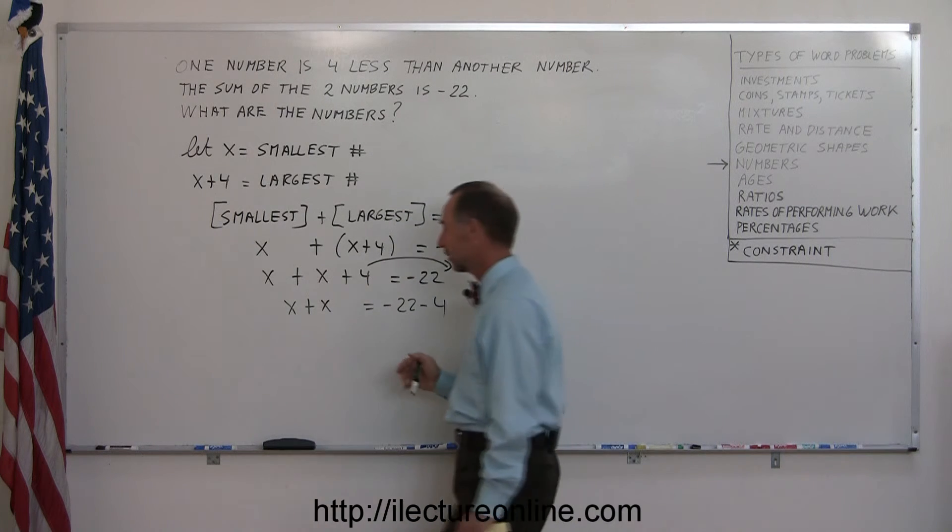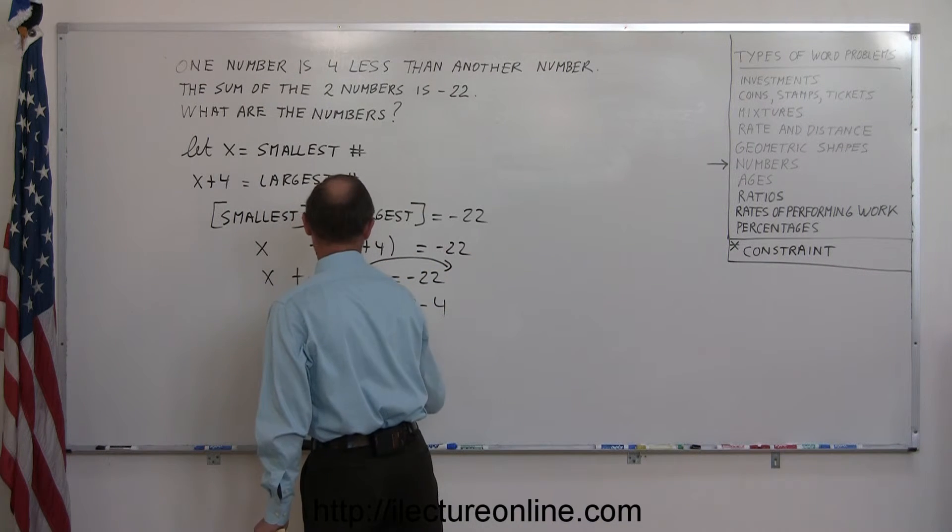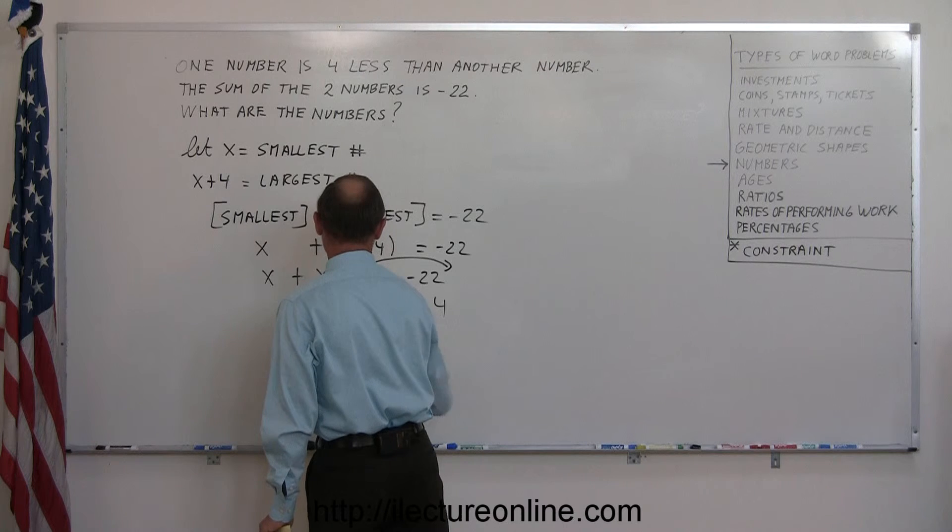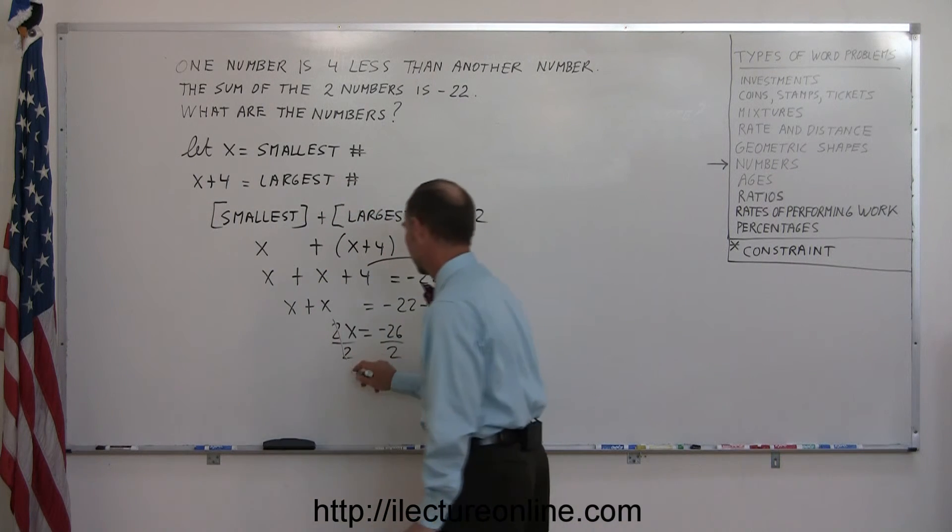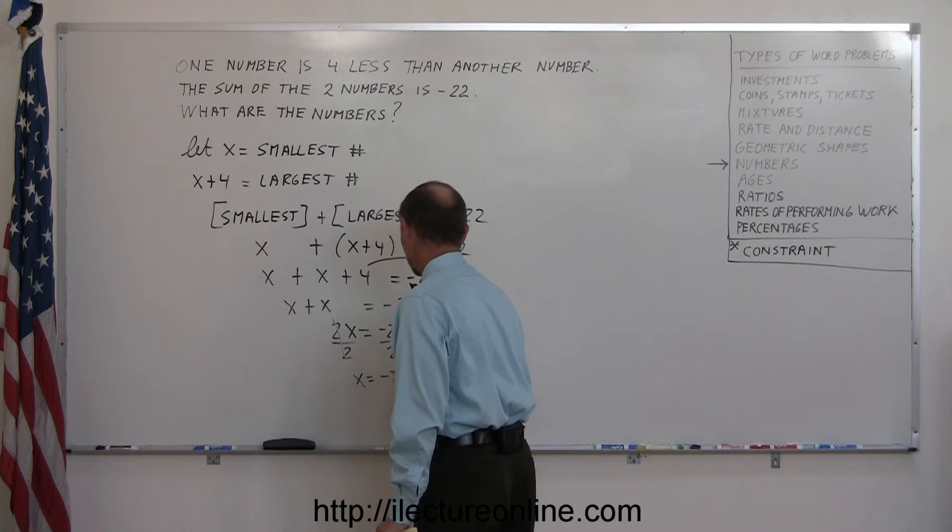Combine like terms on both sides. 2x equals minus 26. Divide both sides by the numerical coefficient of x. x equals minus 13.